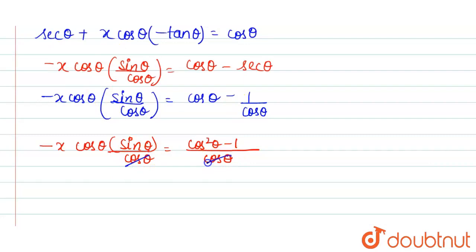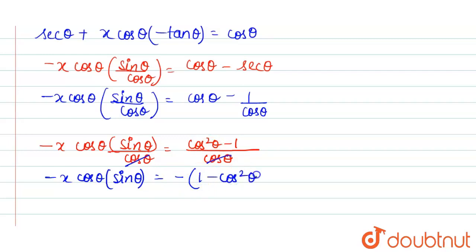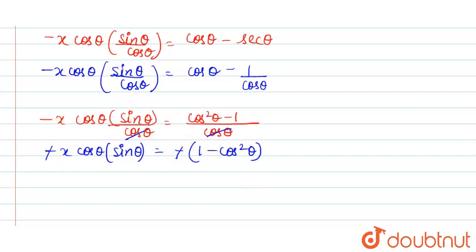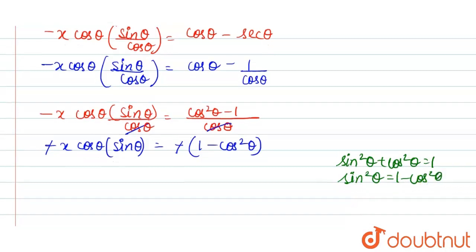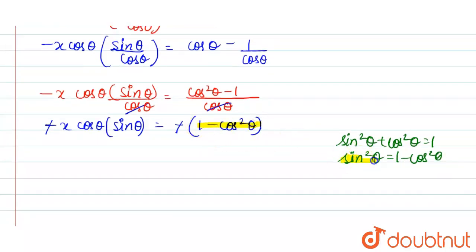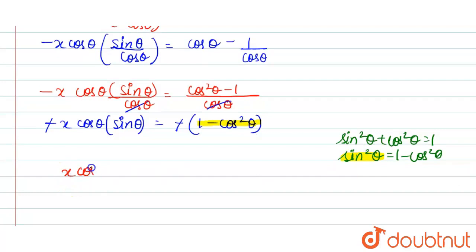So we can write: −x · sin θ = (cos²θ − 1) / cos θ. Taking −1 common from the numerator gives 1 − cos²θ, and both sides the negatives cancel. We know that sin²θ + cos²θ = 1, so 1 − cos²θ = sin²θ. Therefore: x · cos θ · sin θ = sin²θ.